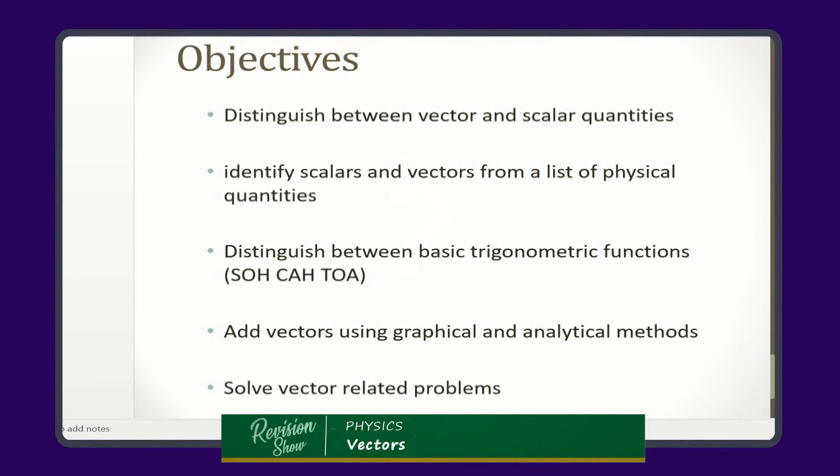Vectors. What are vectors? Before we go to what vectors are, by the end of this lesson I would want you to note the following objectives. By the end of this section, each and every one of you out there should be able to distinguish between what a vector quantity and a scalar quantity is. You should be able to tell me the difference between a vector quantity and a scalar quantity. Again, you should be able to identify vectors and scalars from a list of physical quantities — if I give you a list of physical quantities, you should be able to tell me which ones are vectors and which ones are scalars.